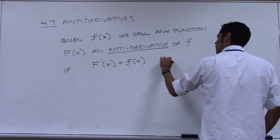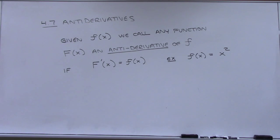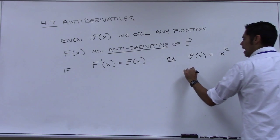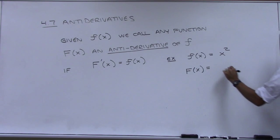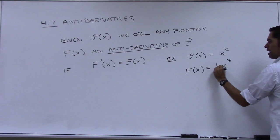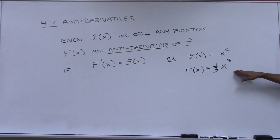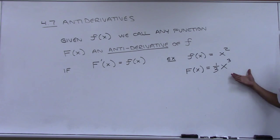For example, if we're given little f(x) = x², any function that when we take the derivative of it we get x² is called an anti-derivative. So some examples of a capital F would be: the power has to go up by one, and to offset the three coming down when we take the derivative, we'd have to put a one-third out here. That would be an anti-derivative. You could always add a number to this — plus one, minus five, whatever — and there's a whole infinite family of functions that would qualify.